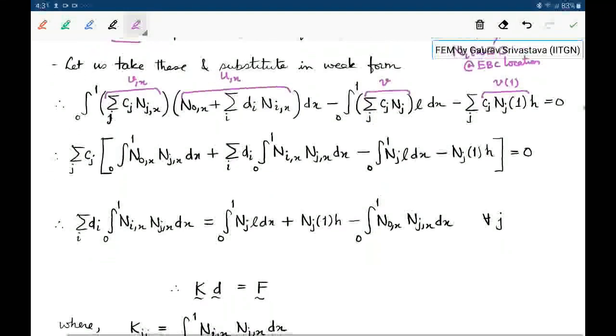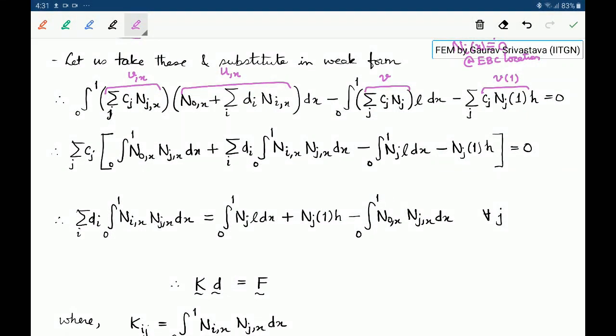Now we can do a lot of manipulation in this. One thing which you will notice is that this C is being multiplied to every term. So we can take this summation over J, Cⱼ common from everywhere.